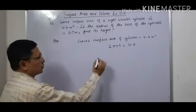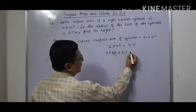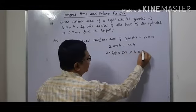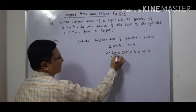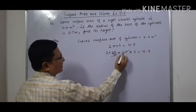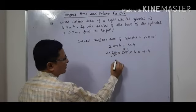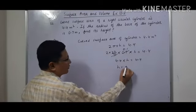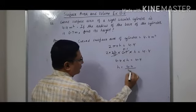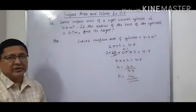So 2 into 22 upon 7 into radius 0.7 meter into H is equals to 4.4. When we cancel this, 0.7 divided by 7 will become 0.1. So 2 into 22 into 0.1 into H equals 4.4, giving 4.4 into H equals 4.4. So H will be equals to 4.4 divided by 4.4. So H will be equals to 1 meter. The height of the cylinder is 1 meter.